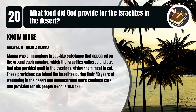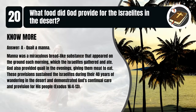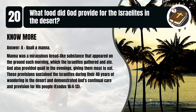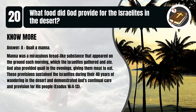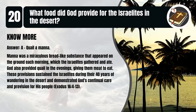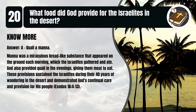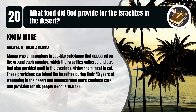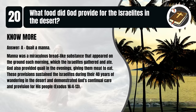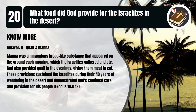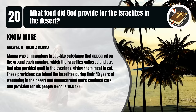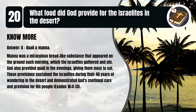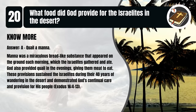That's A. Quail and manna. Manna was a miraculous bread-like substance that appeared on the ground each morning, which the Israelites gathered and ate. God also provided quail in the evenings, giving them meat to eat. These provisions sustained the Israelites during their 40 years of wandering in the desert and demonstrated God's continual care and provision for His people. Exodus 16:4-13.